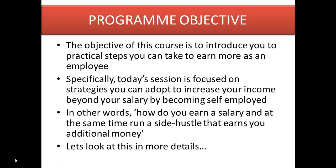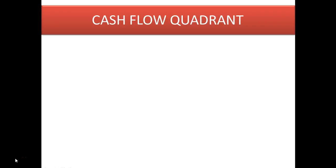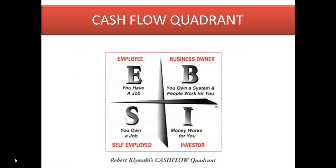The financial model we're using for this program is the Cashflow Quadrant, propounded by Robert Kiyosaki, where there are four quadrants that basically determine how income flows to every individual. The Cashflow Quadrant has four quadrants: we have the employee quadrant, the business owner quadrant, the self-employed quadrant, and the investor quadrant.